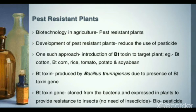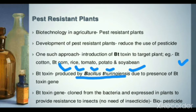We have BT corn, rice, tomato, potato, soybean as BT crops — these plants produce their own pesticide. BT full form is Bacillus thuringiensis. We modify this concept: BT toxin gene is cloned from bacteria and expressed into the plant to provide resistance to insects — no need of external insecticide. This is a bio-pesticide. We extract the toxin substance from bacteria and introduce it into the target plant, so if any insect eats the plant, it will be killed.